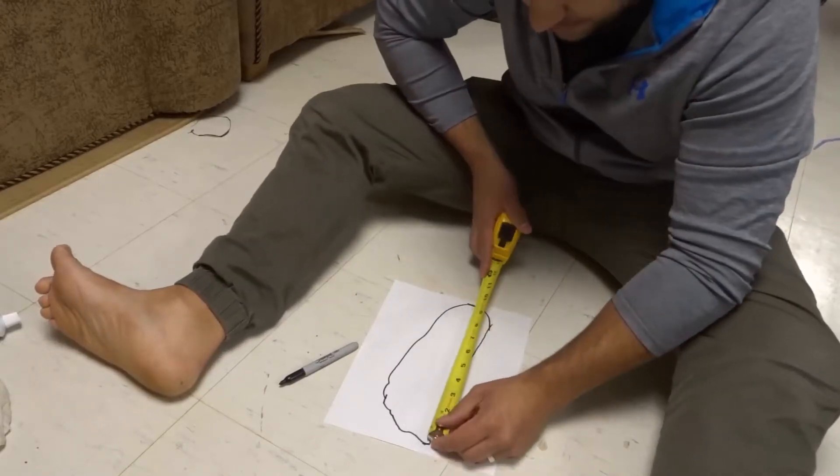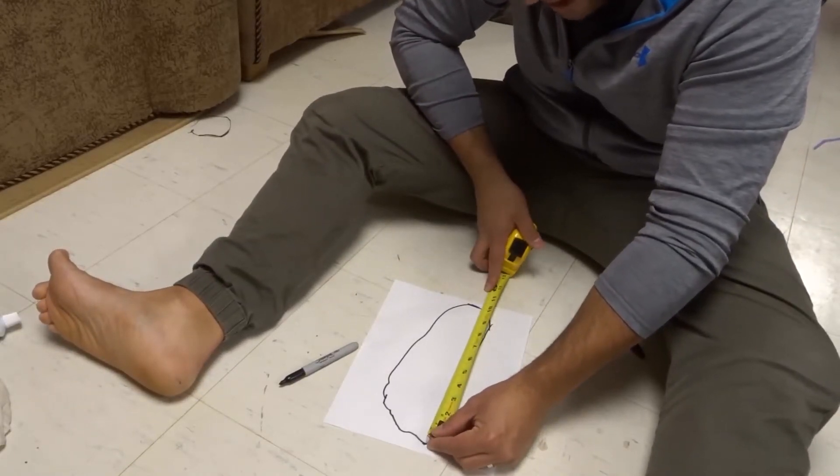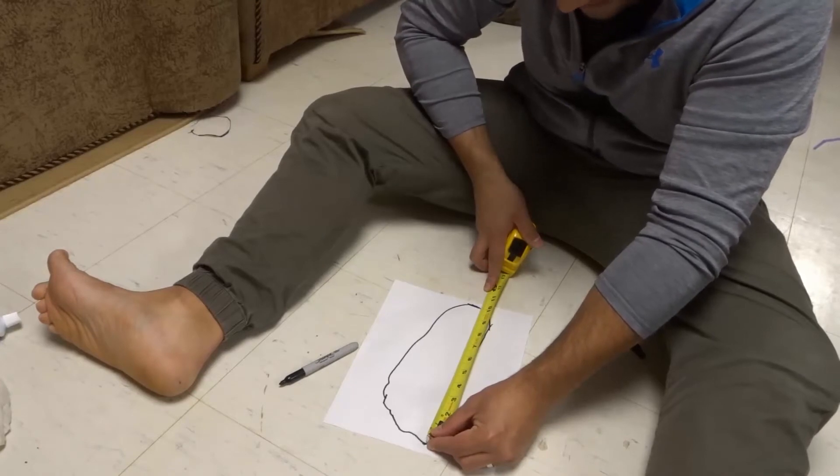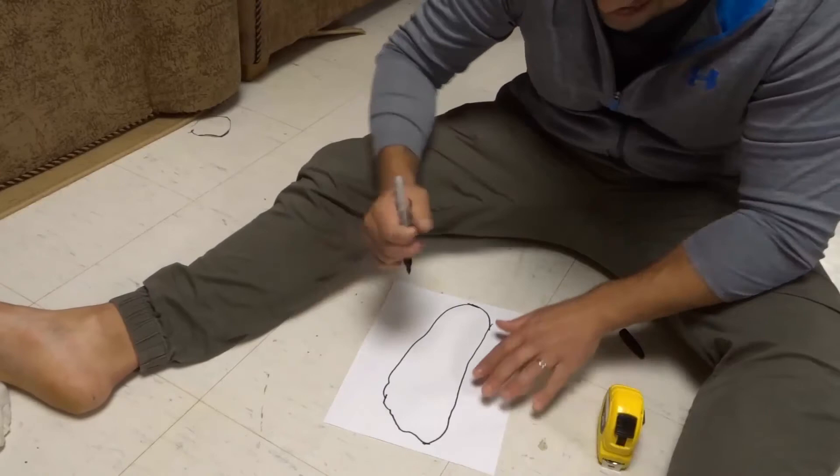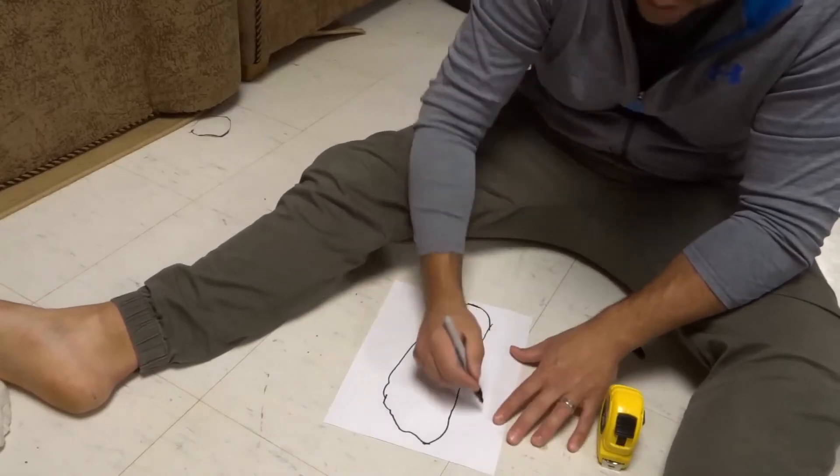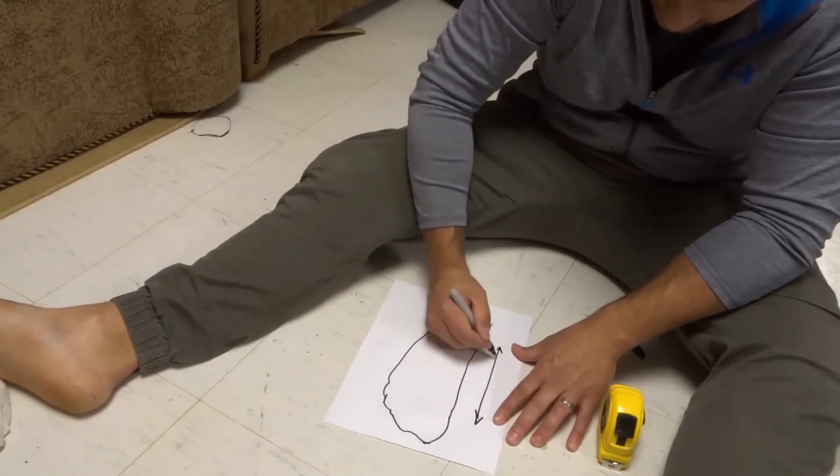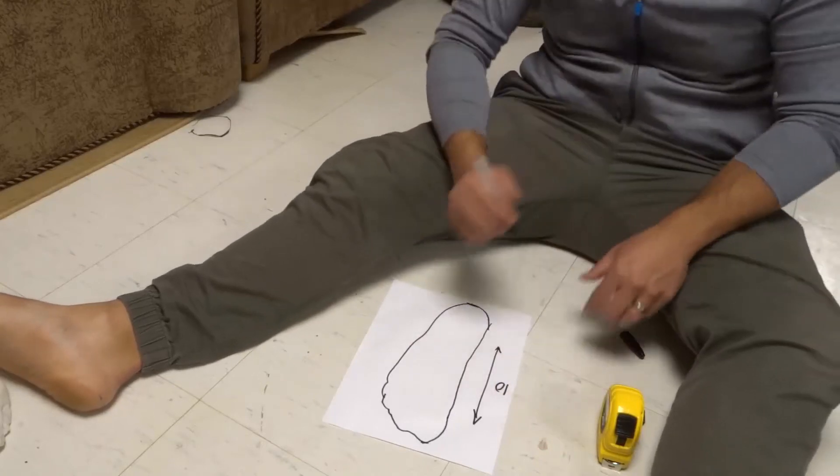We're going to measure from the furthest toe to the heel. And I can see that my measurement for my length is 10 inches exactly. So I know that the distance in length is going to be 10 inches exactly.